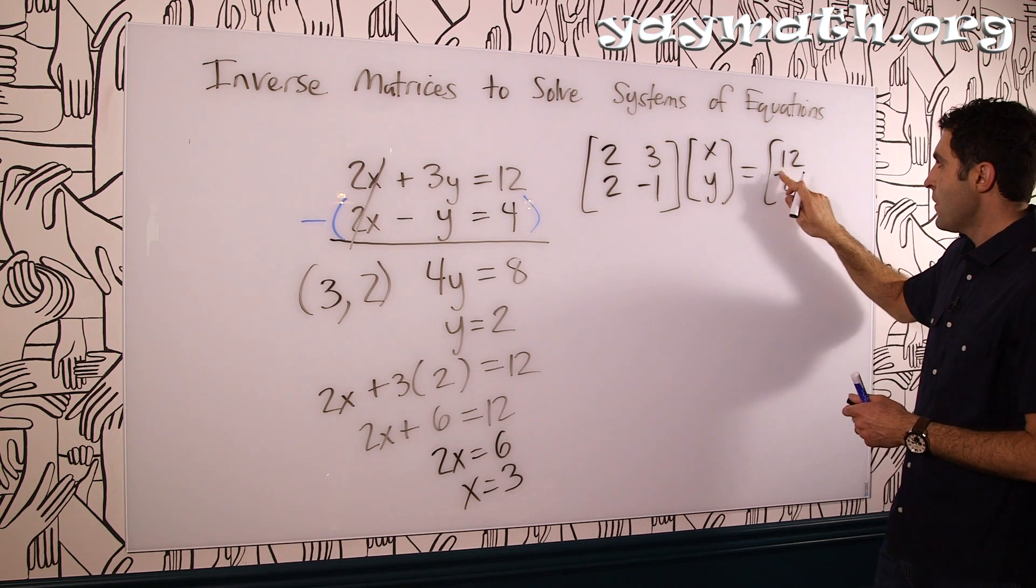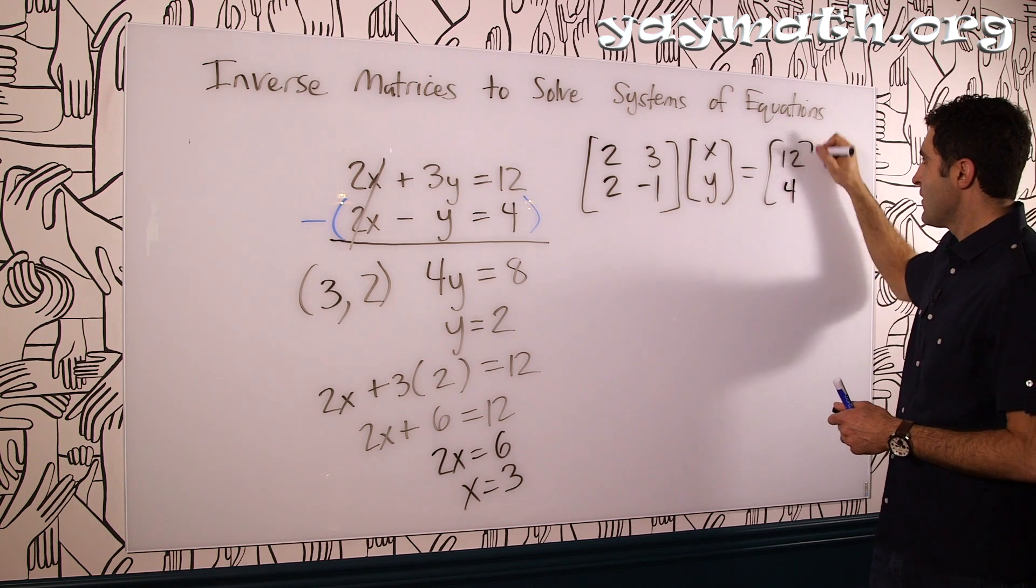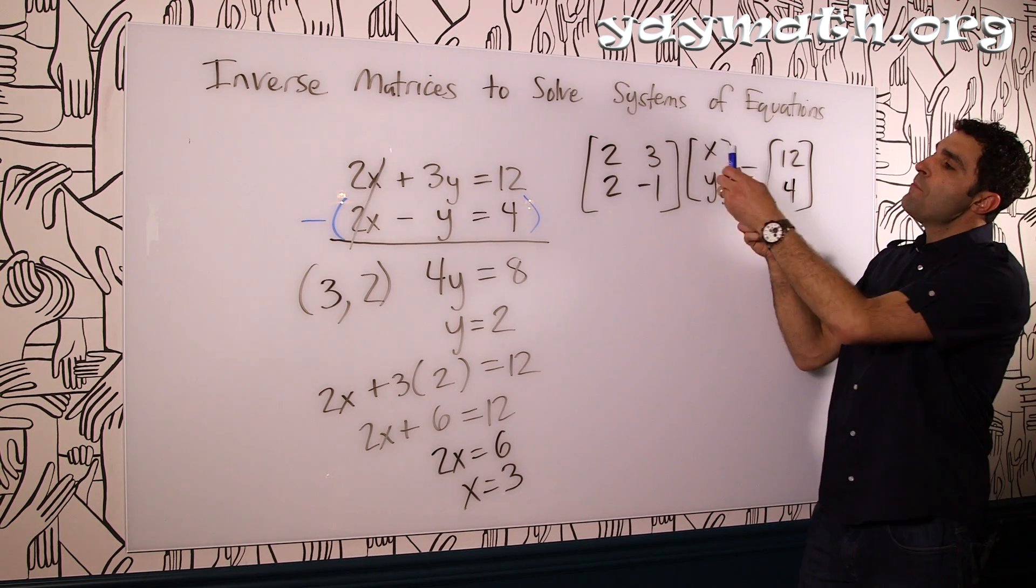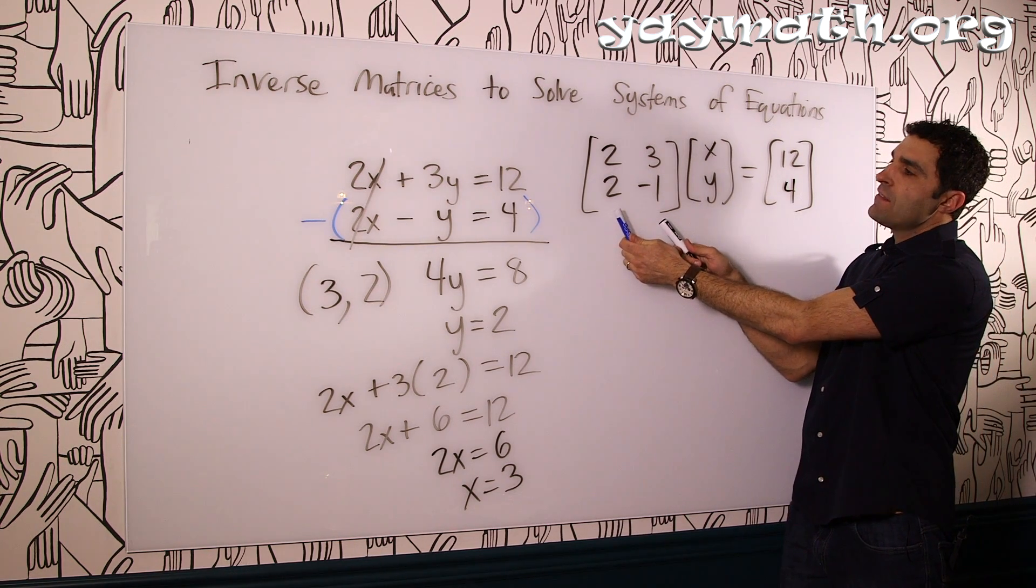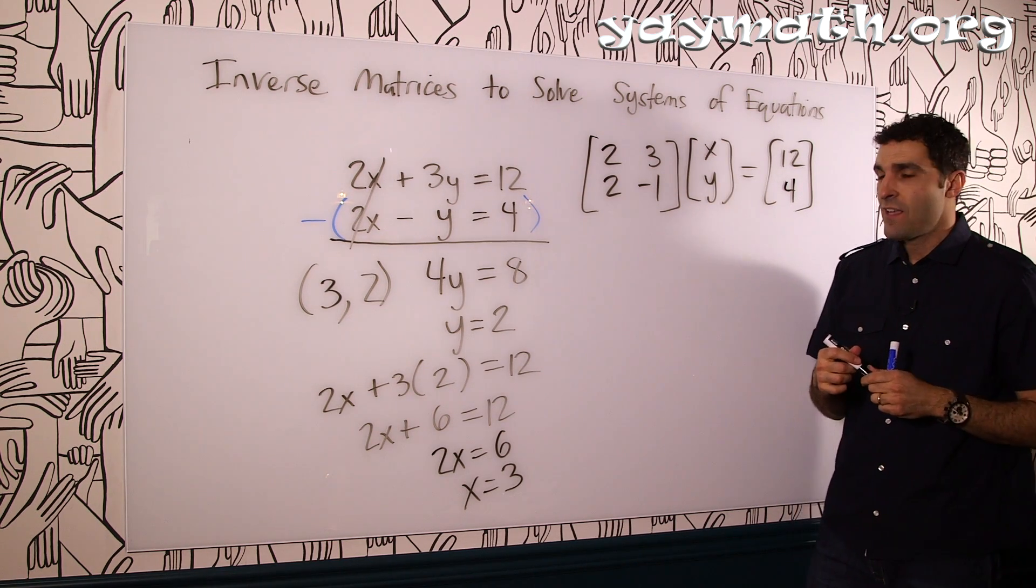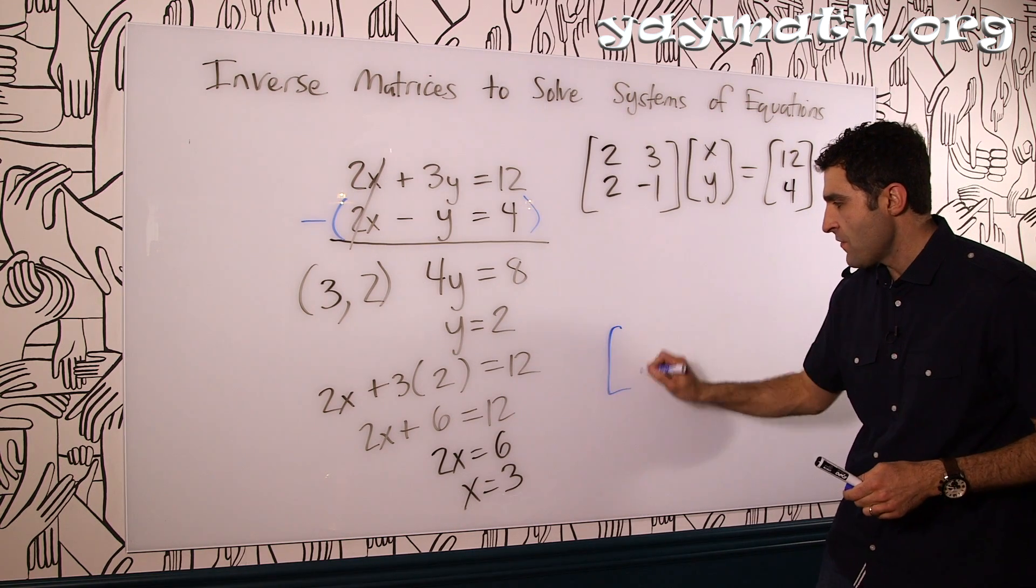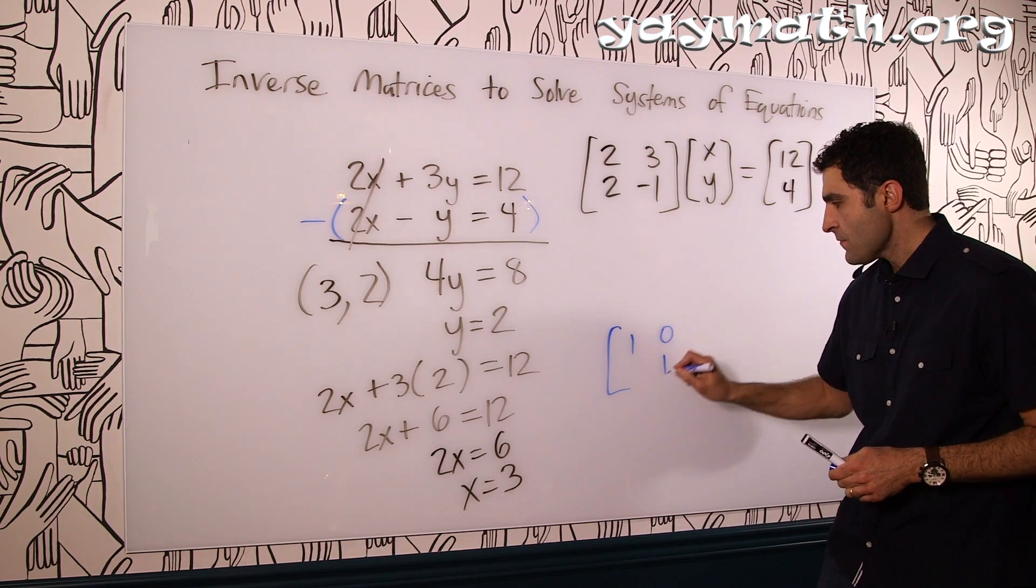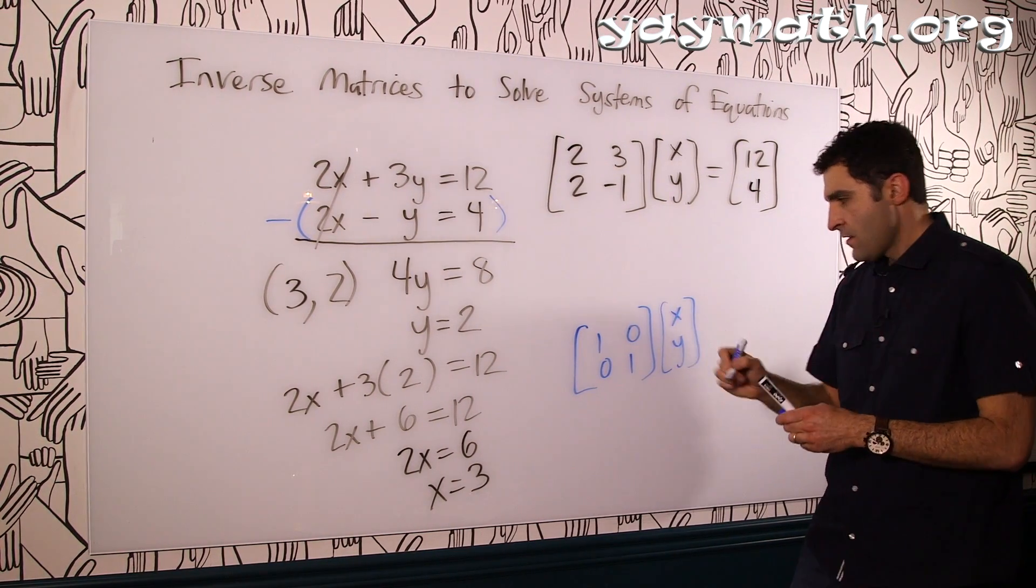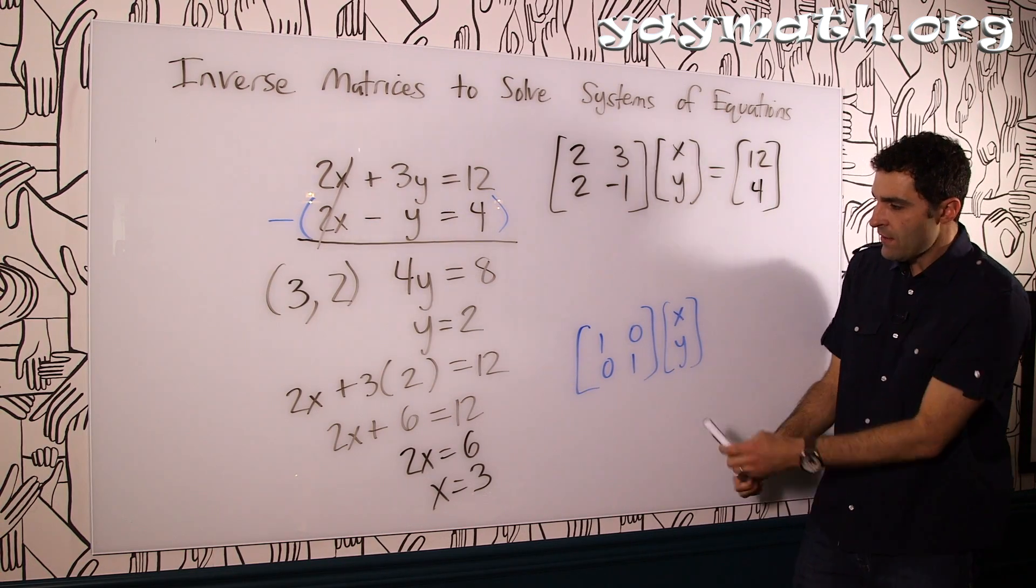So the goal would be to multiply this by something such that it becomes the identity matrix. A reminder what the identity matrix is: identity matrix is a bunch of ones and zeros. So you can imagine if you multiply this matrix times x and y, what will end up happening is 1x plus 0y.